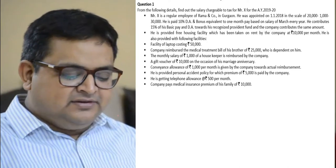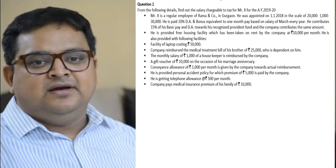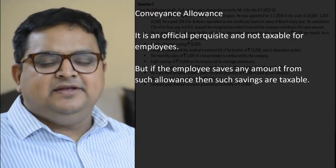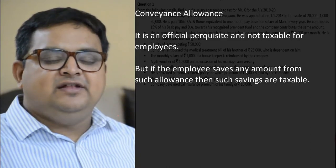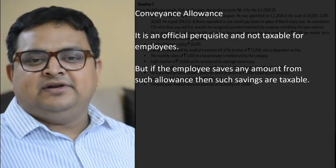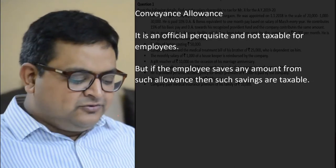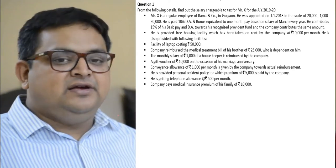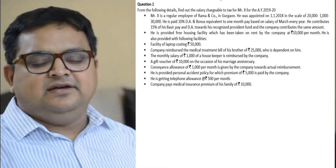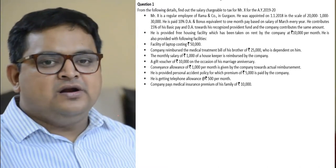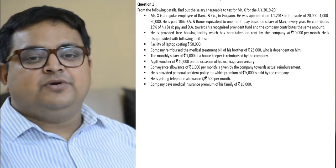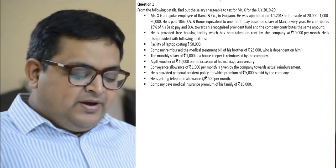Convenience allowance of ₹1,000 per month is given by the company towards actual reimbursement. Convenience allowance is paid when you travel within the city for office purposes — that is an official allowance. Official allowances are not taxable; they are purely exempt. Here the employee gets ₹1,000 and spends ₹1,000 since it is actual reimbursement. If there were any savings — say ₹800 spent and ₹200 saved — that ₹200 would have been taxable. But here it is fully spent, so it is exempt.